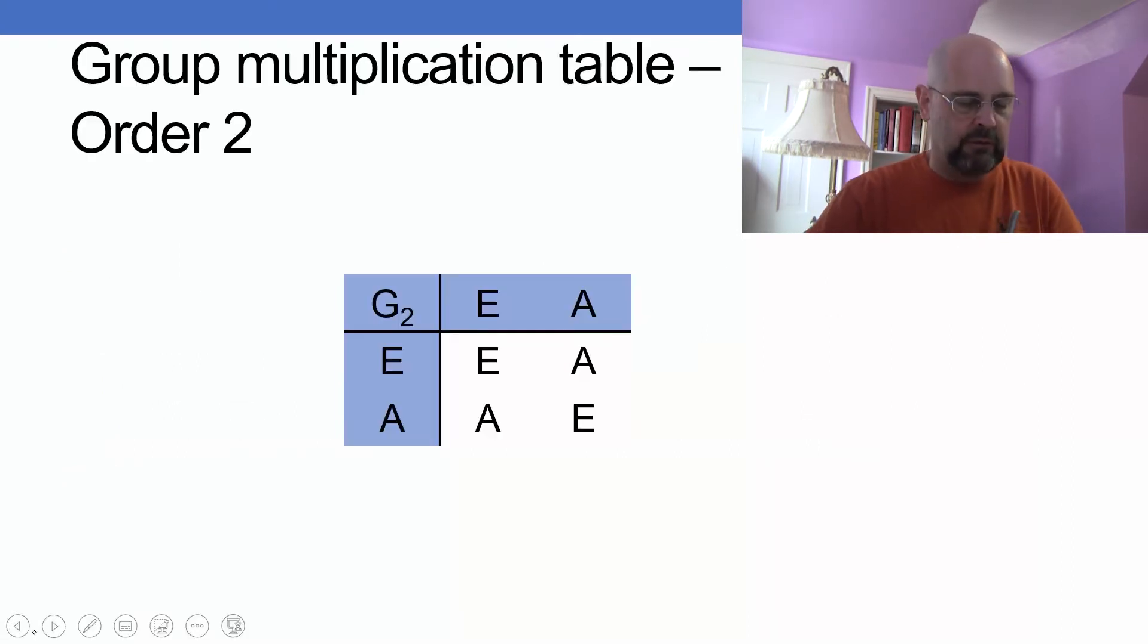So we have one possible group multiplication table for order two. I have two components here, A and the identity element E, and AA is equal to E.